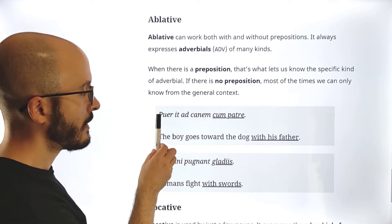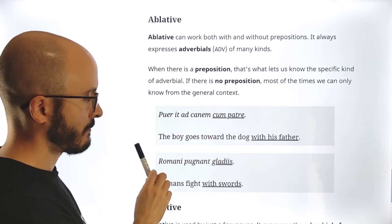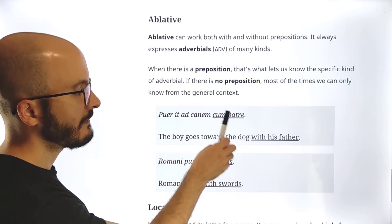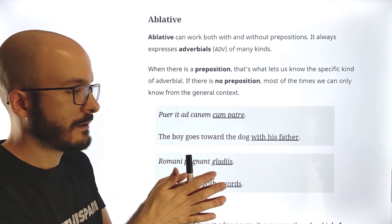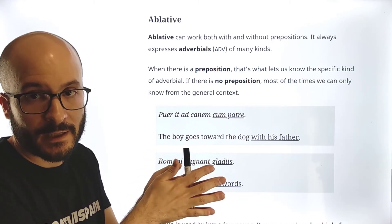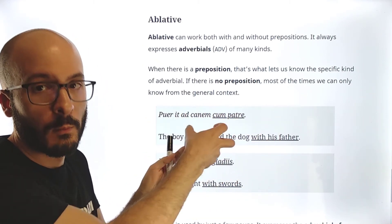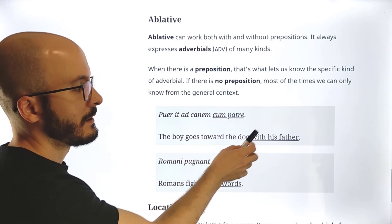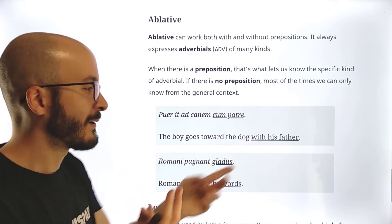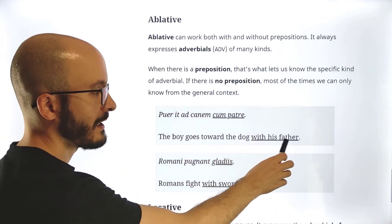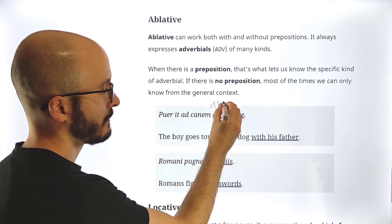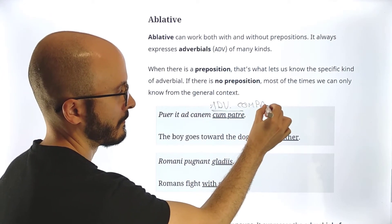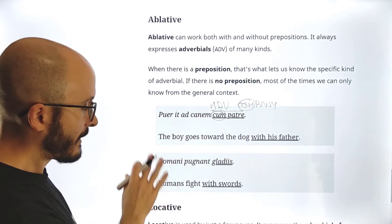So let's see the examples. Puer it ad canem cum patre. The boy goes toward the dog with his father. So here we have cum. This preposition expresses company. So actually, company, cum, cum, company. So this cum we translate with the preposition with. So the boy goes toward the dog with his father. So this is an adverbial. This is an adverbial of company. So again, you see cum, cum.